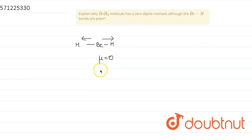That's why BeH2 molecule has a zero dipole moment although bonds are polar because there is a difference of dipole moment. But overall their dipole moments cancel out each other.